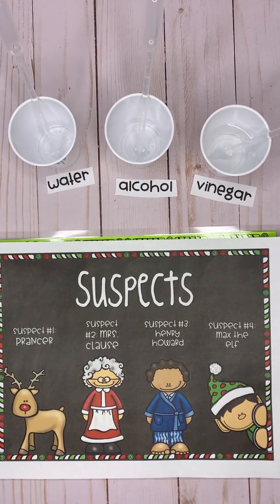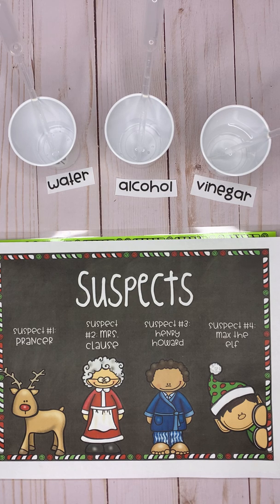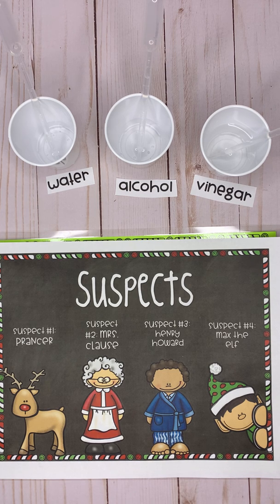Hello boys and girls! Today we're going to try to solve the case of the missing Santa by conducting an experiment that's going to identify the mysterious white substance that was found at our crime scene. Now by now you know that Santa was missing but he's been found. The only problem is that somebody pushed him into a chimney and now Christmas is on hold until we can get this crime solved. So today you're going to help me do that with a little science experiment.